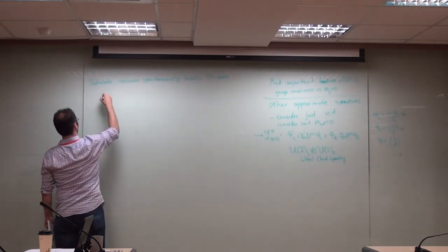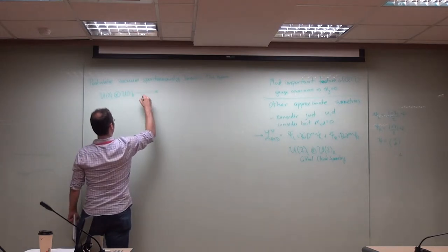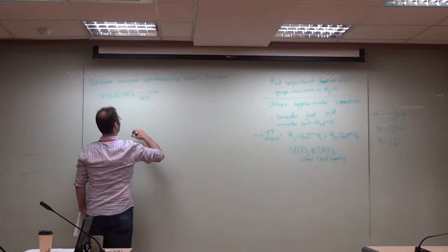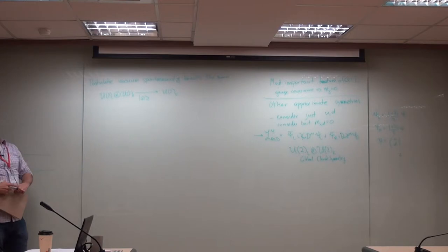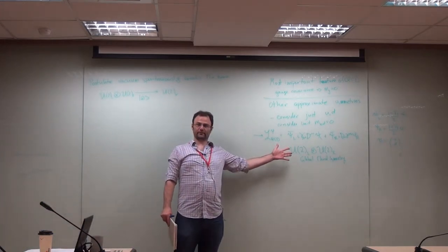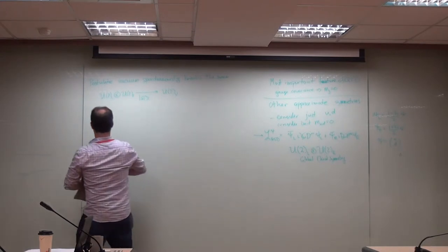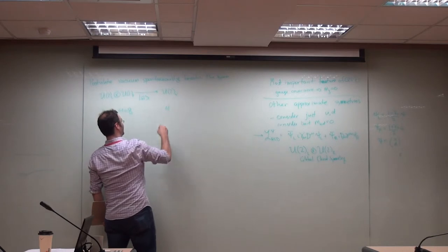We postulate that the QCD vacuum spontaneously breaks the symmetry. We start with U(2)_L × U(2)_R, and the vacuum of QCD breaks this down to the U(2) vector subgroup. The Nambu-Goldstone theorem tells us that for every generator that is spontaneously broken, there has to be a massless degree of freedom. U(2) has four generators: three from SU(2) plus one from U(1), so we start with eight generators total and break down to four.